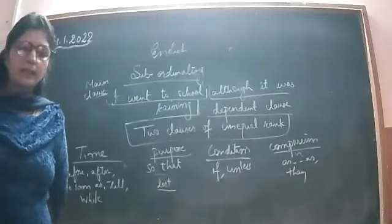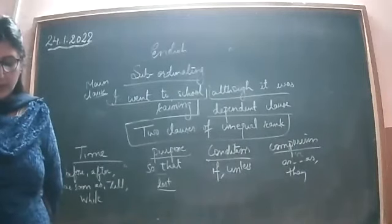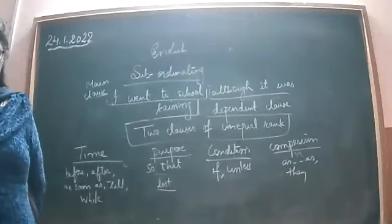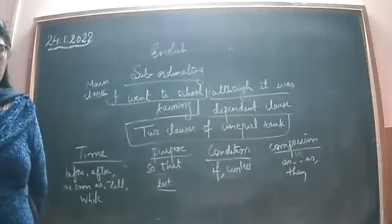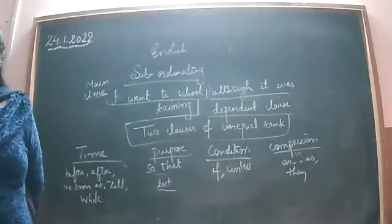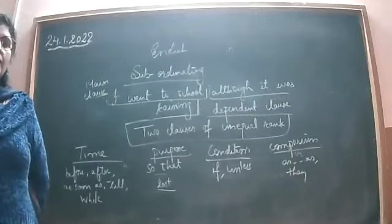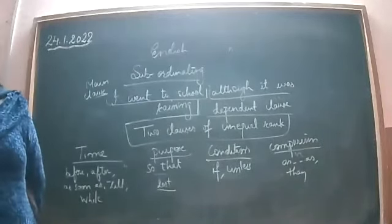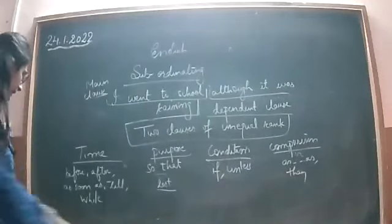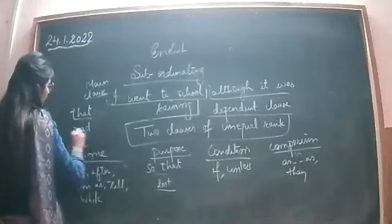Now we have to join sentences using conjunctions. First: 'Please rest. You will fall ill.' — Answer: 'Please rest, otherwise you will fall ill.' Or: 'Please rest or you will fall ill.' Second: 'They laugh very hard. Tears roll down their cheeks.' — Both 'so that' and 'and' can be used: 'They laugh so hard that tears roll down their cheeks.'